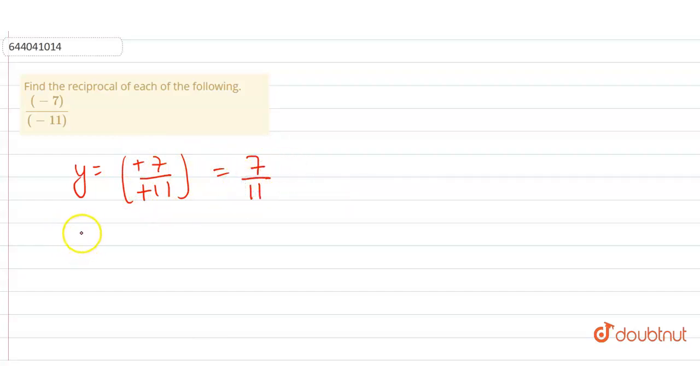What is the meaning of reciprocal? It is equal to 1 by y. So now it is equal to 1 divided by 7 by 11.